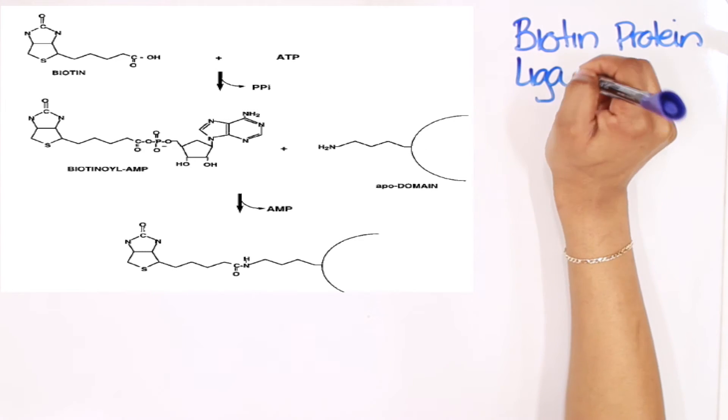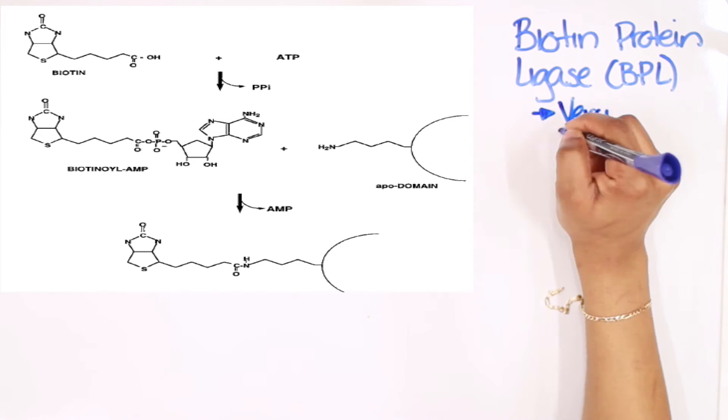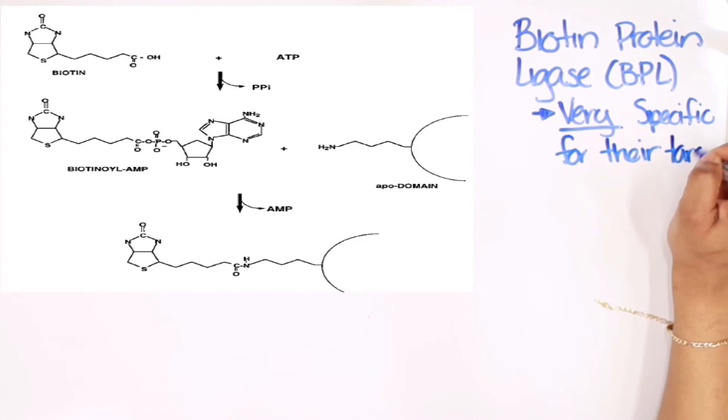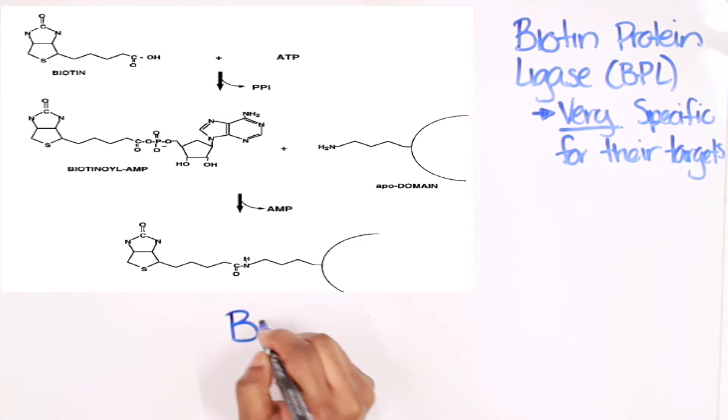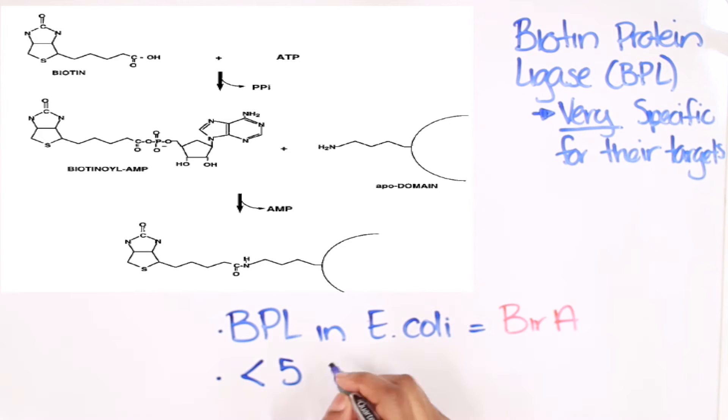Biotin protein ligases have a very high specificity for their natural targets. Although biotinylation occurs in basically all organisms, less than five proteins are naturally biotinylated per organism. In E. coli, BirA is the name of the biotin protein ligase. It only biotinylates one protein naturally.